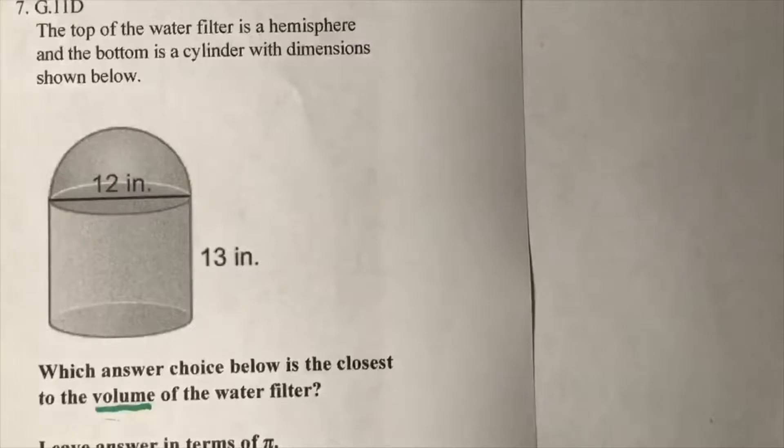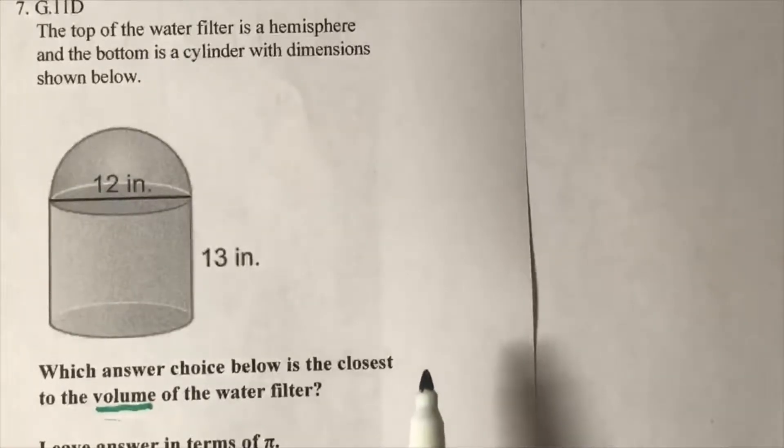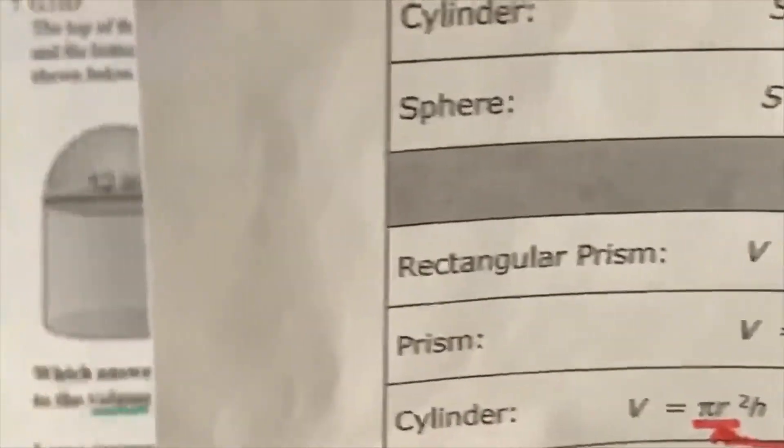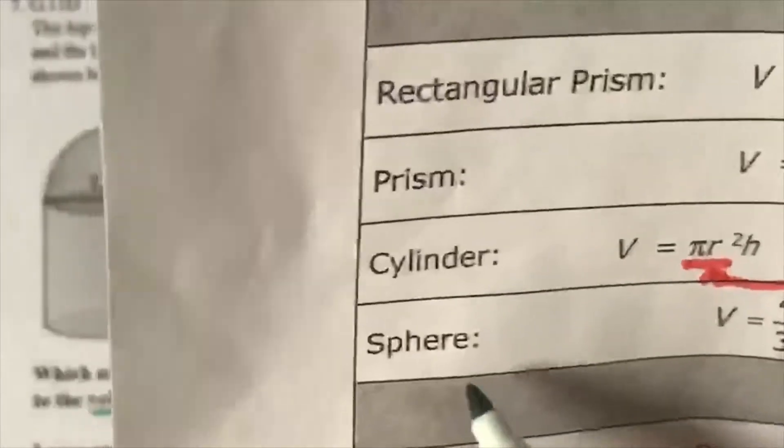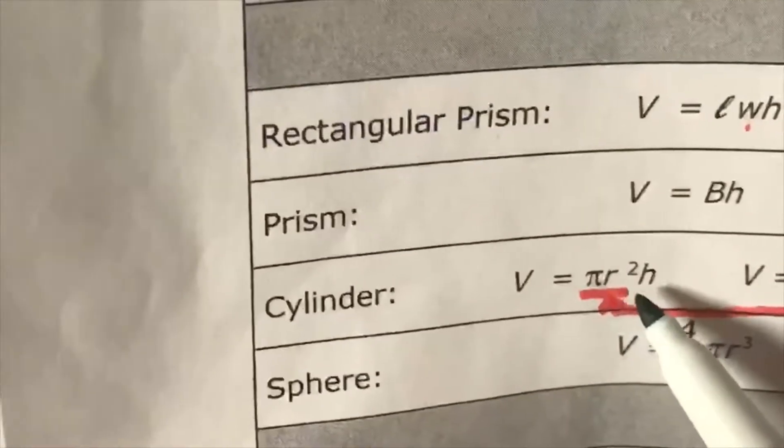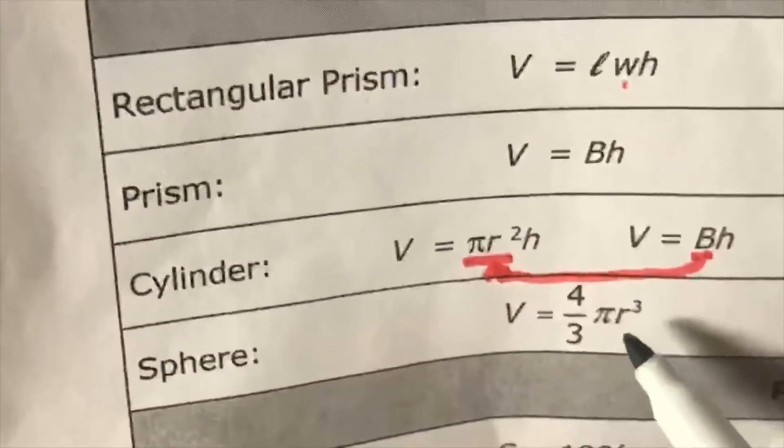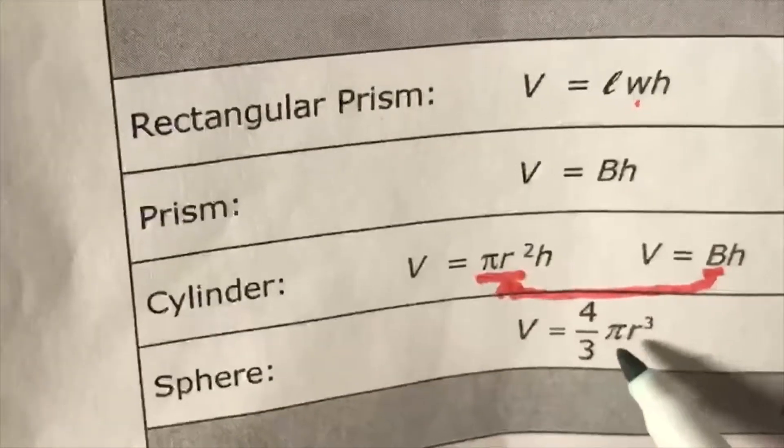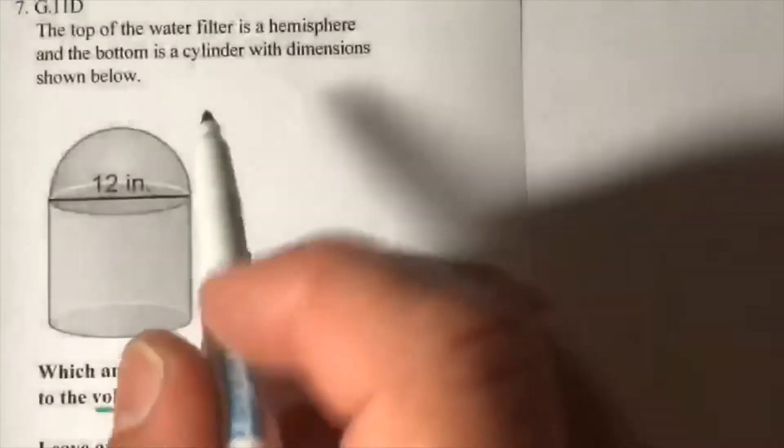Let's get our formula. Go ahead and write down all of it and then take out the part we want. We want the volume of a cylinder and a sphere. The cylinder is πr²h and the sphere is 4/3πr³.